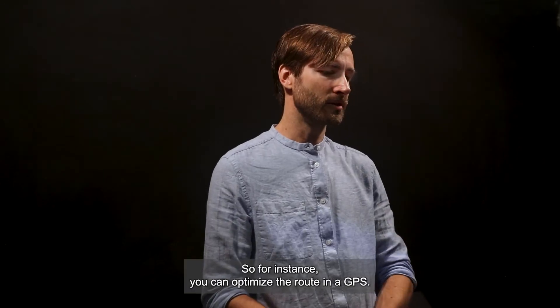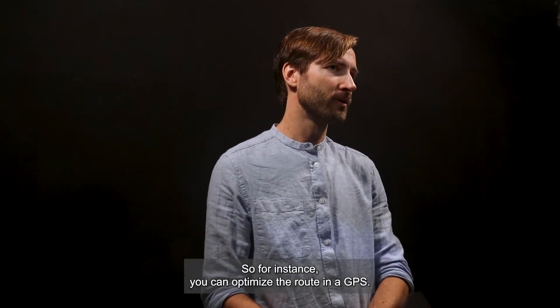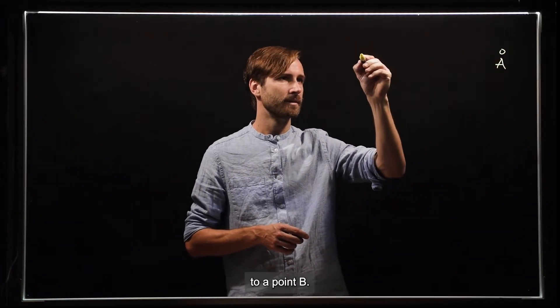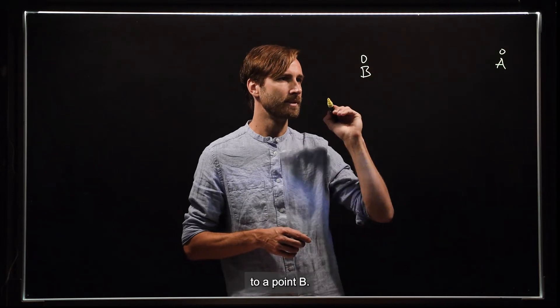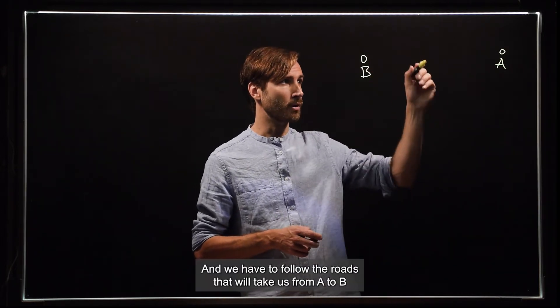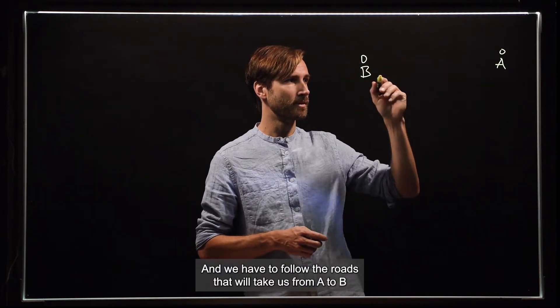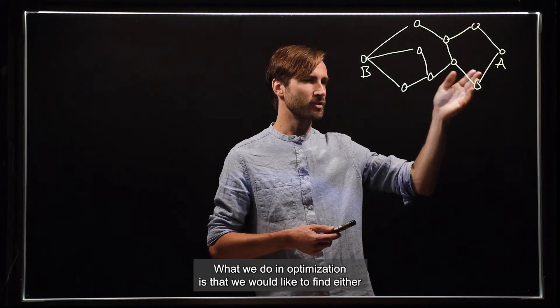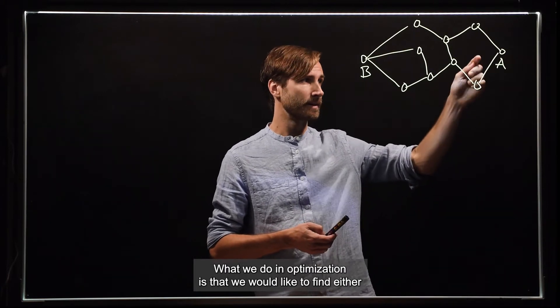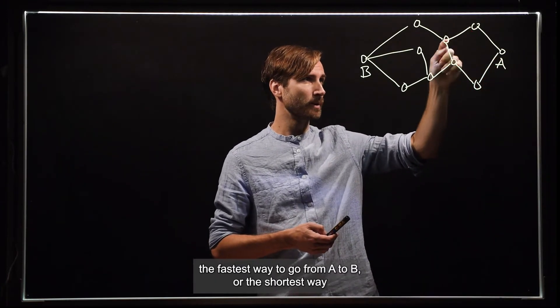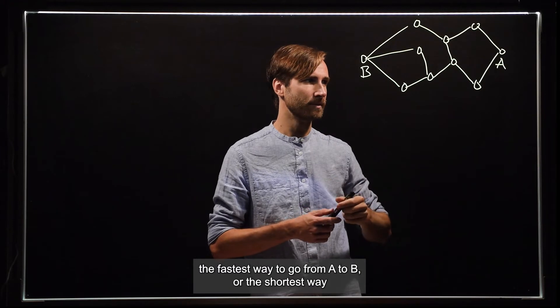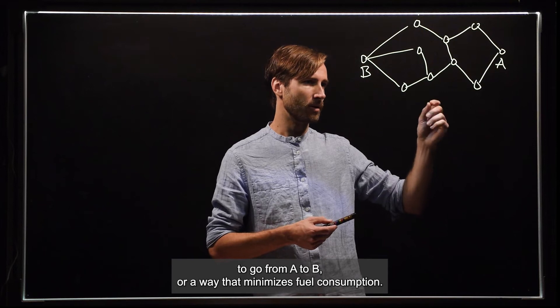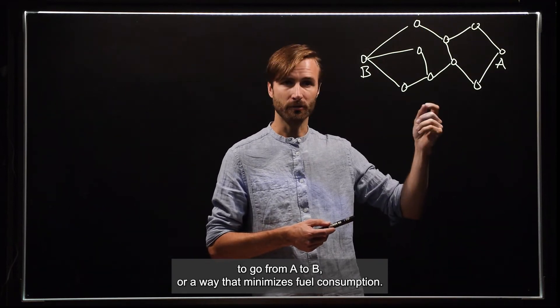So for instance, you can optimize the route in a GPS. We would like to go from a point A to a point B and we have to follow the roads that will take us from A to B. And there may be several options. So what we do in optimization is that we would like to find either the fastest way to go from A to B or the shortest way to go from A to B or a way that minimizes fuel consumption.